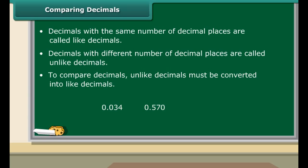Annexing zeros in the end will not make any difference to the value of the decimal. Compare 0.05 with 0.1. We can write 0.1 as 0.10 because there are two decimal places in 0.05. Now it is easy to tell that 0.10 is greater as it represents 10 hundredths, whereas 0.05 represents 5 hundredths.